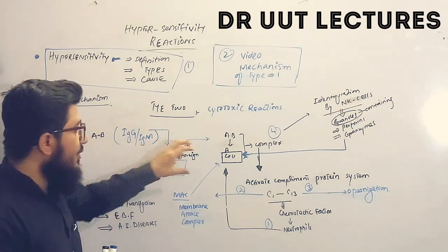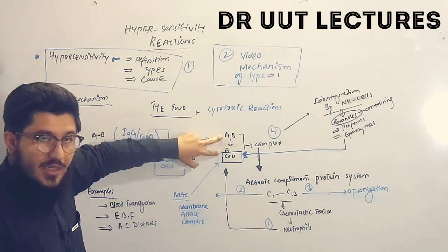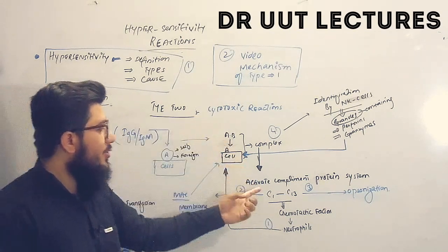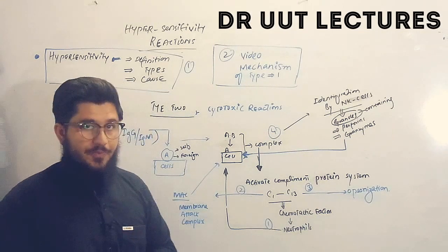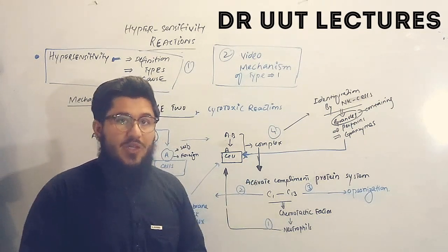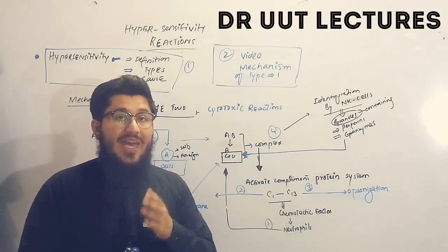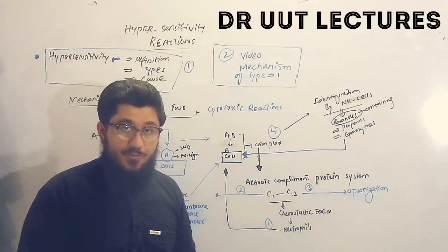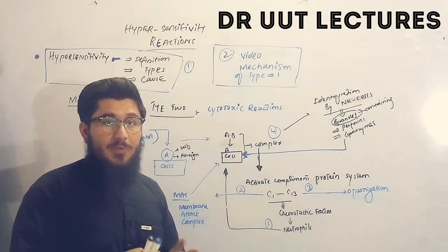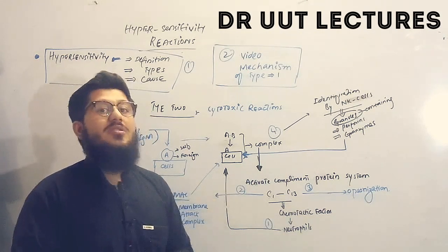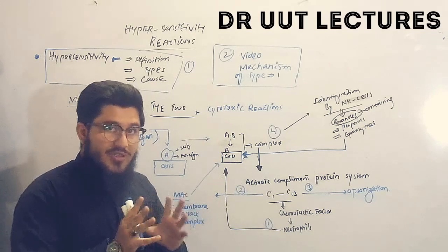When the antibody binds to the antigen, they will produce an antibody-antigen complex. This complex is responsible for activating the complement protein system, which is composed of C1 to C13 — meaning we have 13 types of complement proteins. These proteins are further responsible for causing the hypersensitivity reaction through three steps.